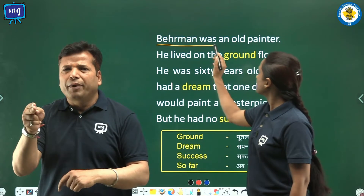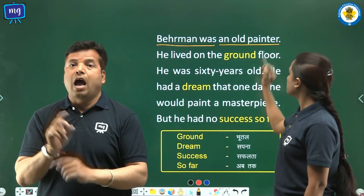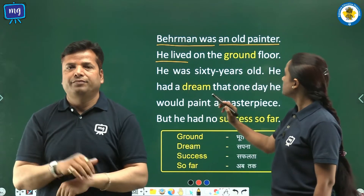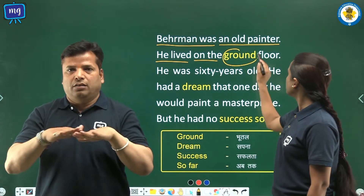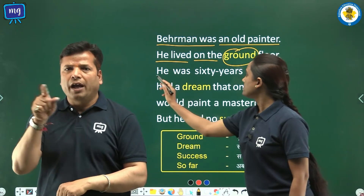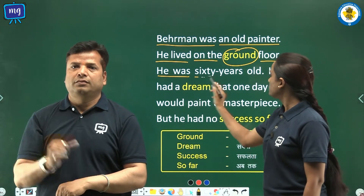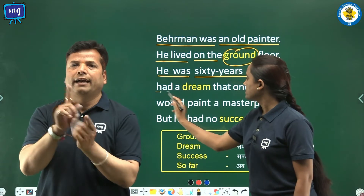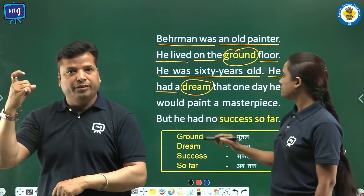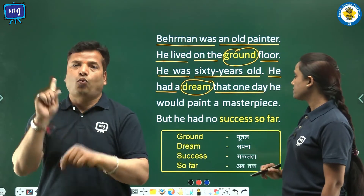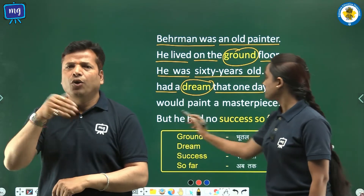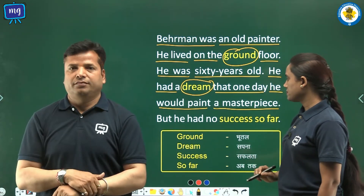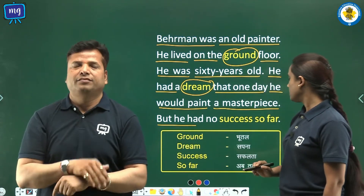Behrman was an old painter. He lived on the ground floor. He was 60 years old. He had a dream that one day he would paint a masterpiece, but he had no success so far.